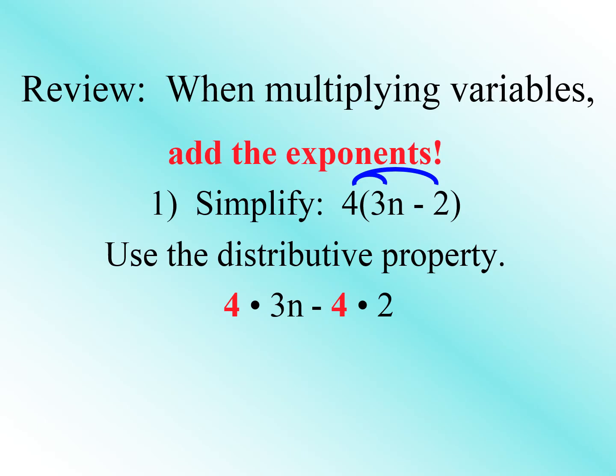4 times 3 will give us 12 times n, so we have 12n. Then minus 4 times 2 will give us 8. So our final answer will be 12n minus 8.